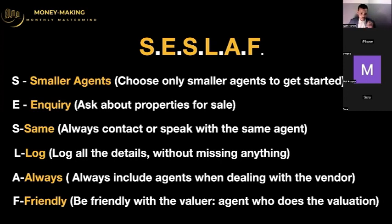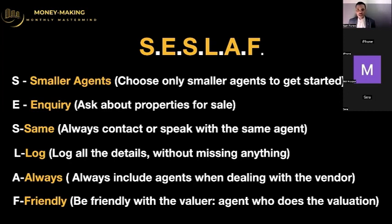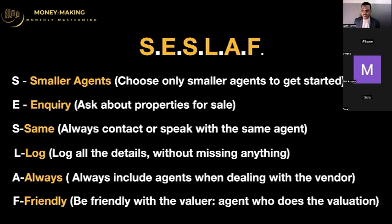The L stands for Log. What I mean by log is using software like Google Sheets or Excel to record all the details about the properties — the vendor details, how many years on the market, how many rooms, whether it was sold or not. I can give you a document called the viewing checklist where you can record everything — it's free. It's about keeping all the detailed records and data.